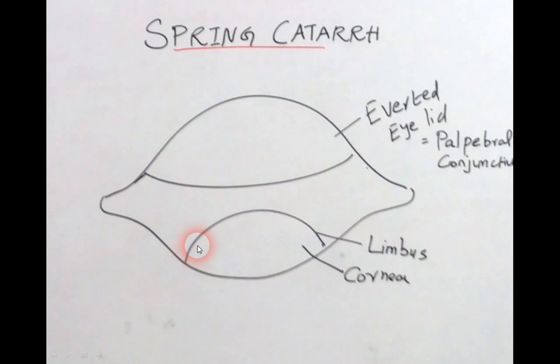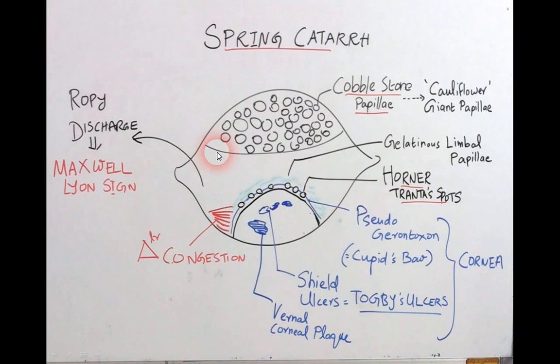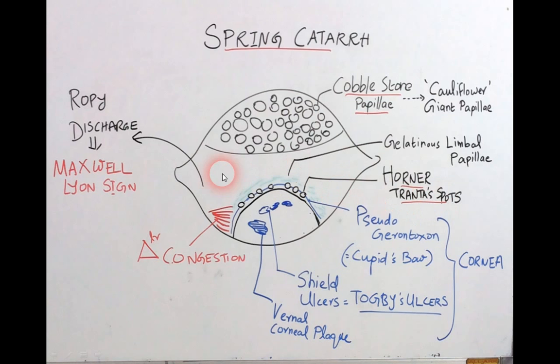Observe this whiteboard sketch carefully. This is the eyeball, this is the cornea, and I have drawn the limbus — the corneoscleral junction. I have averted the upper eyelid, thereby exposing the inner palpebral conjunctiva. Over the palpebral conjunctiva, you can observe cobblestone papillae — the hypertrophied papillae, also called pavement pattern papillae. They can go for cauliflower-like growth called giant papillae. These papillae can also be observed in the limbal region, called gelatinous limbal papillae. There are also raised white discrete lesions called Horner-Trantas spots.